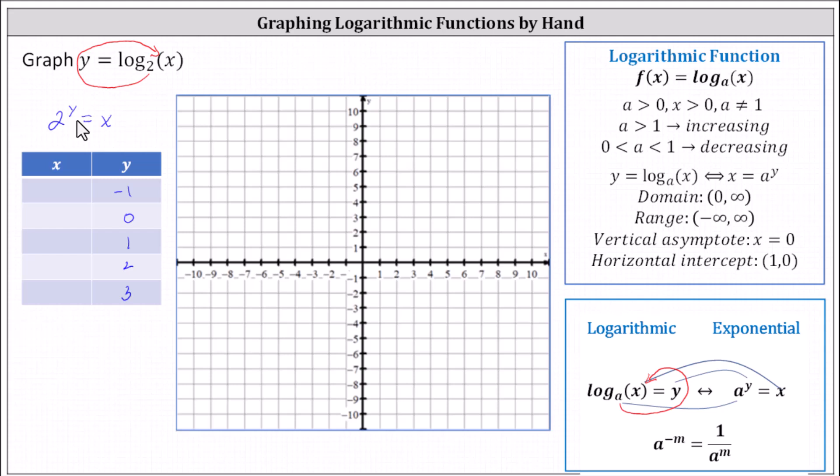Notice when y is equal to negative one, we have two to the power of negative one equals x. Recall that two to the power of negative one is equal to one divided by two to the first, or one half, giving us x equals one half.